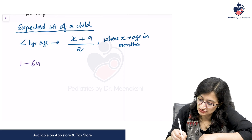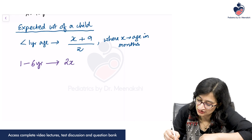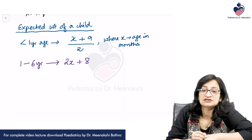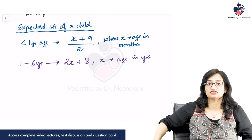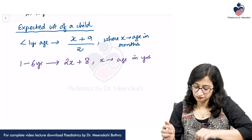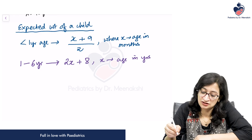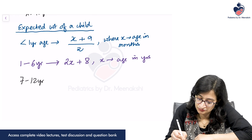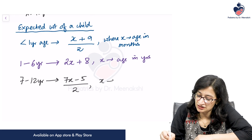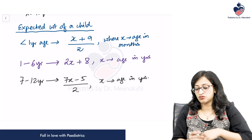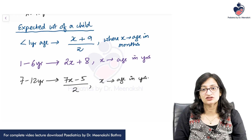The expected weight from 1 to 6 years of age is: 2x + 8, where x is the age in years. For children 7 years and older, if a child is 7 years old, the expected weight would be calculated as (7² − 5) / 2 = (49 − 5) / 2 = 44 / 2 = 22 kgs.